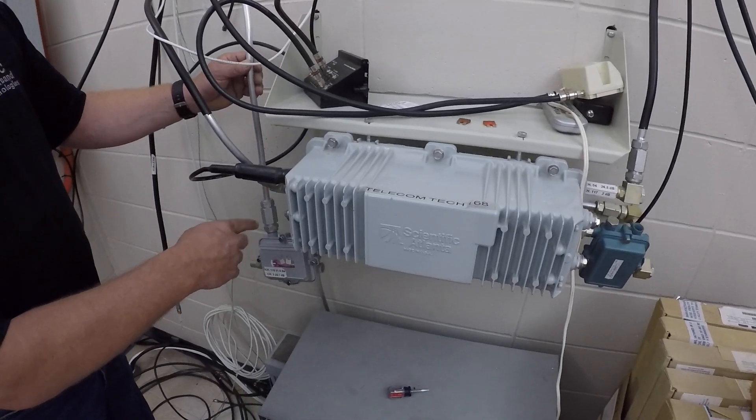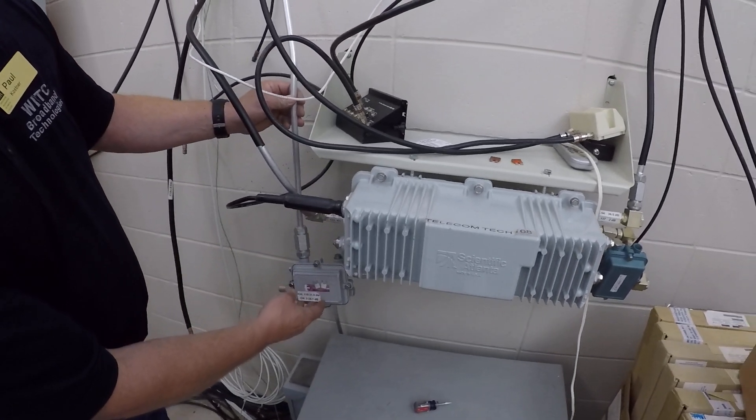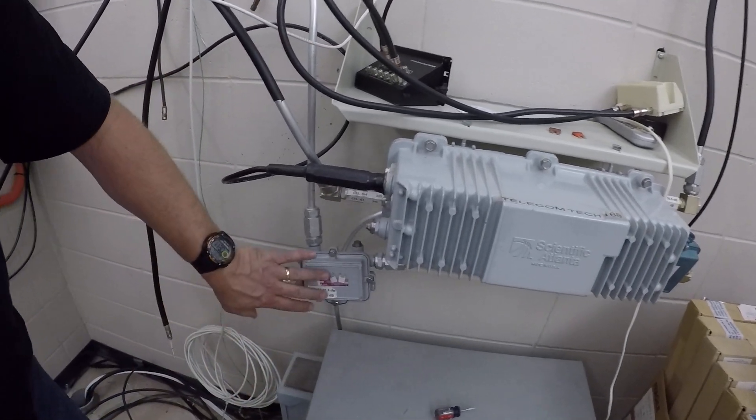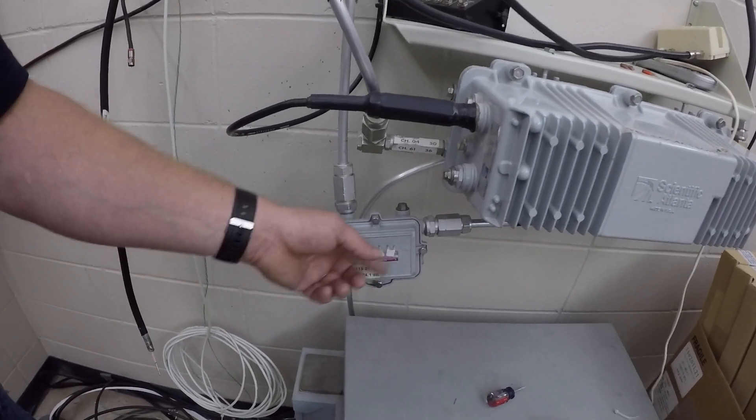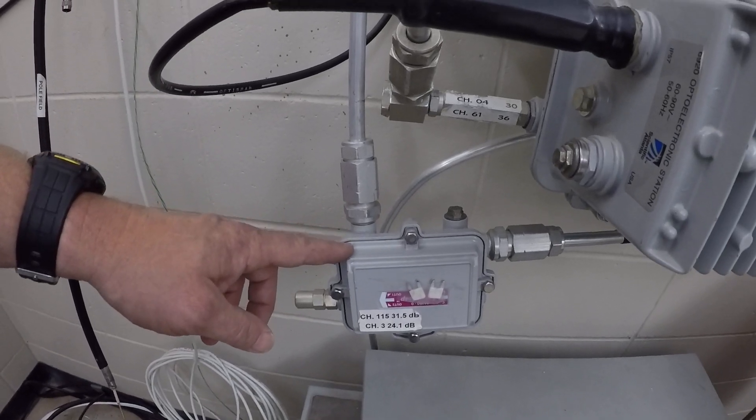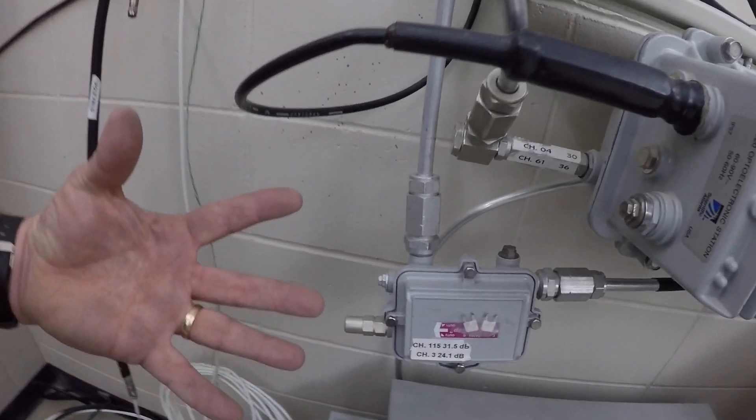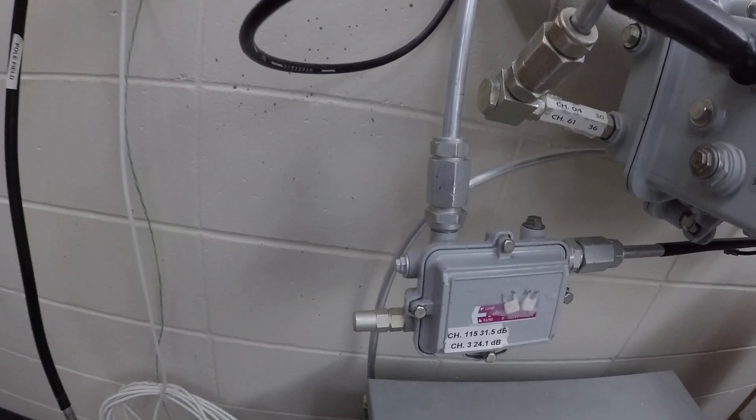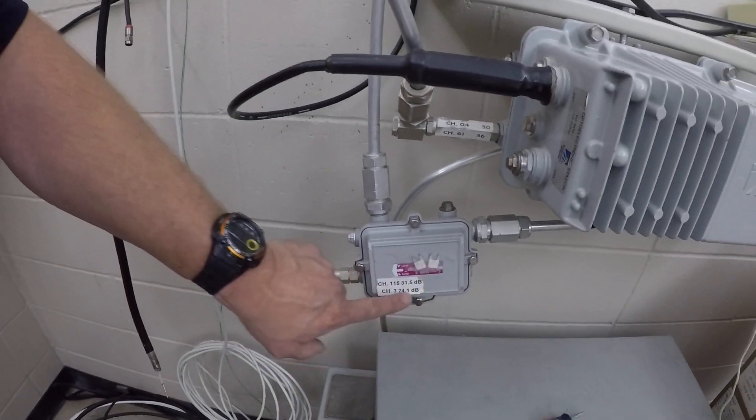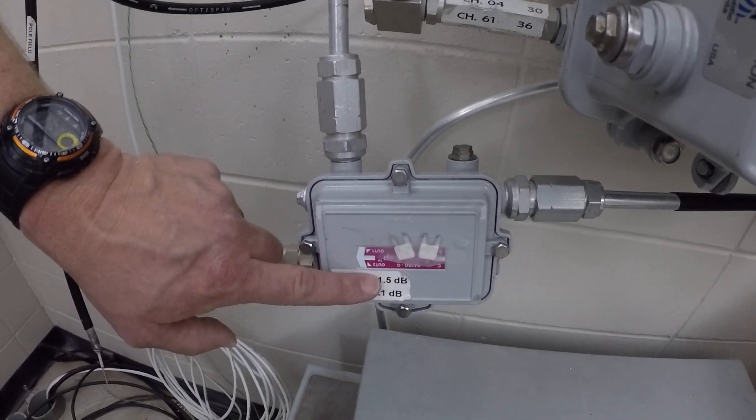Here's two more different outputs that we have. This output here, this component is called the directional coupler, where you'll have an input and then you have two outputs. It's kind of similar to a splitter, but it doesn't distribute the signal equally. And once again, we have reference points in our service.